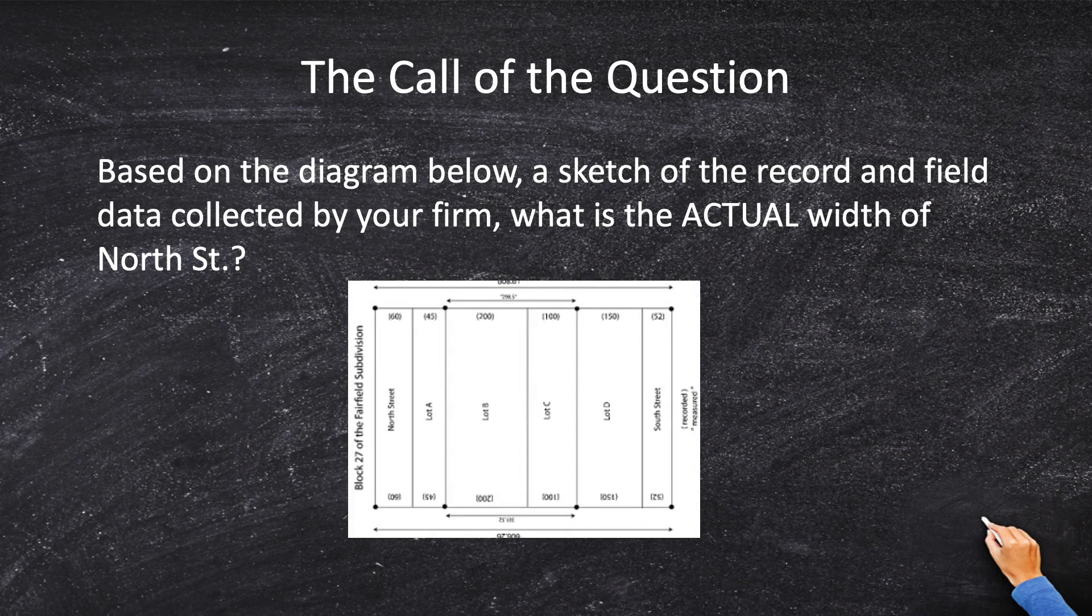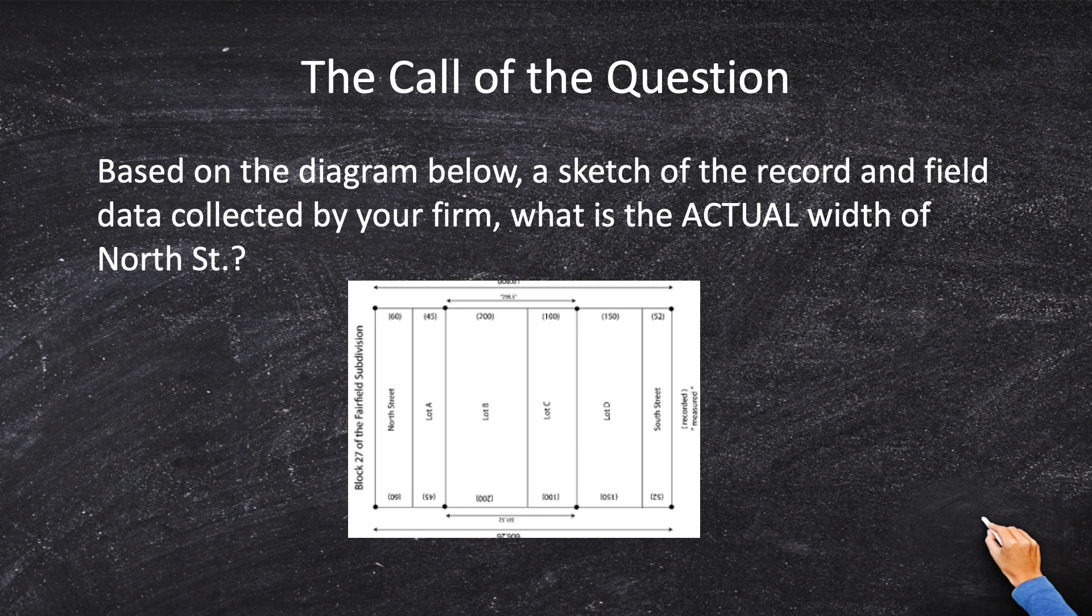So we've got Block 27 of the Fairfield subdivision. And within the subdivision, this block, we've got several different sets of monuments. We've got the outside perimeter monuments, thank God, but we've also got some interior monuments. And we appreciate and we remember that the closest and the best, the closest and the most reliable set of monuments will be used to proportion a given property. Now, unless you've got like 40-20 vision, you really can't see this. So let's actually blow this diagram up and let's see it on our screen full size.